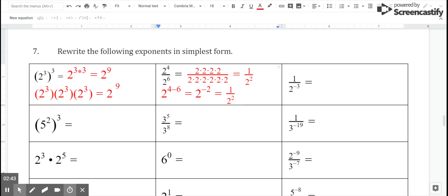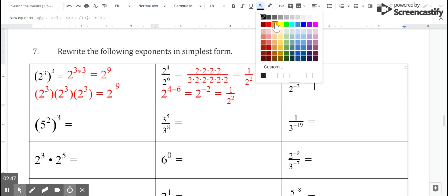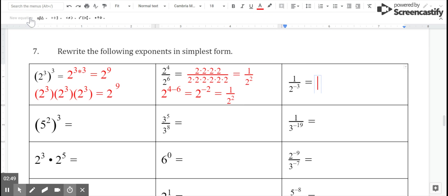Let's take a look at the far right column. If I wanted to write one over two to the negative third power with a positive power, what I would need to do is just switch the location of that exponent and make the power positive. So one over two cubed,